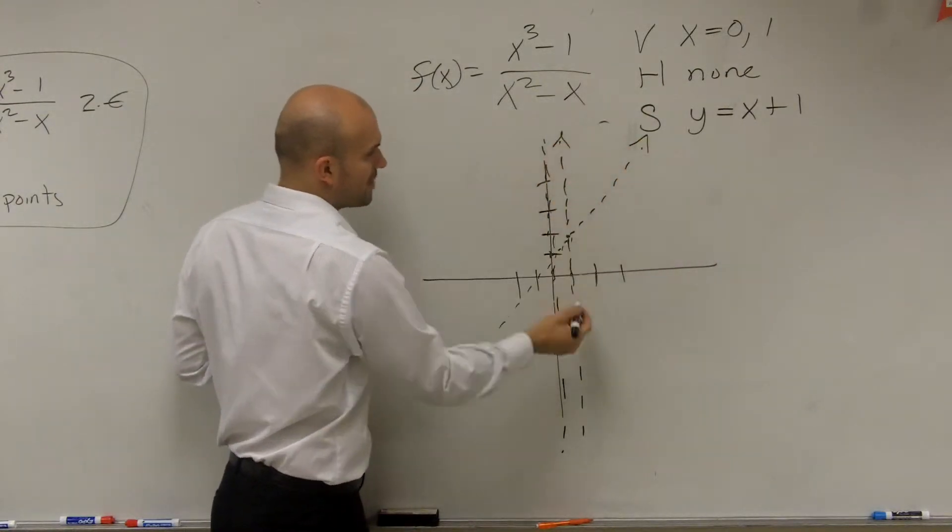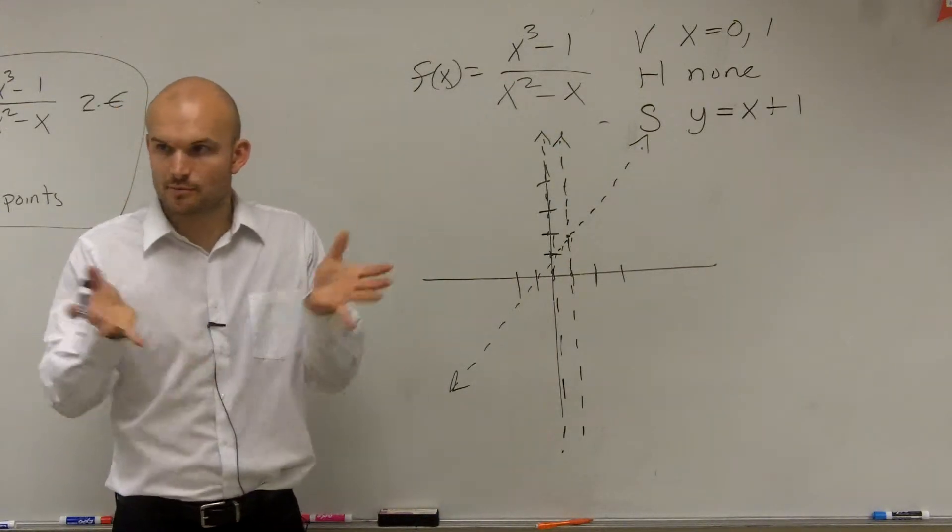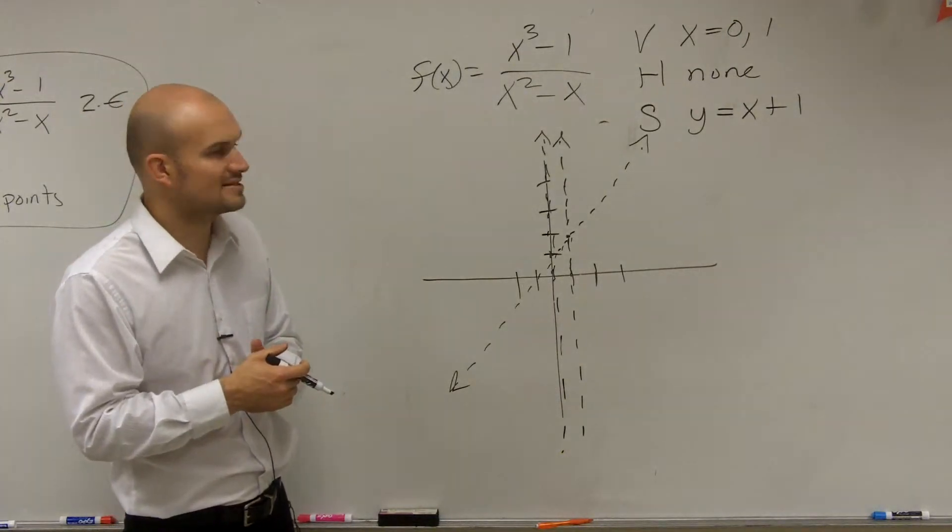So that's what all our asymptotes are. Remember, our asymptotes are where our graph is going to approach. Right? Remember, your graph approaches your asymptotes. So let's just go and take a look at some points and see what we can come up with.